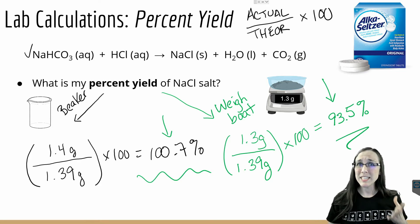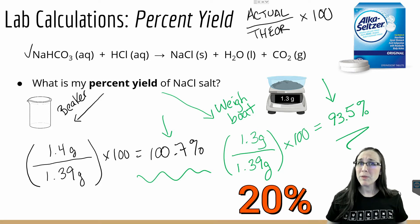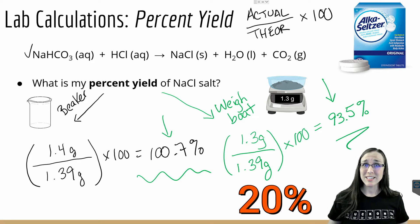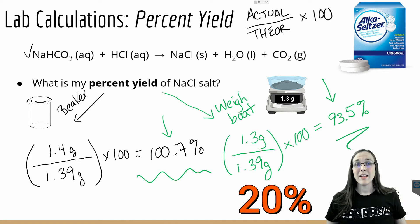What if I have a percent yield that's substantially lower than what I expected, say like 20 percent? Well that would imply that I did a pretty crappy job of getting all of the product I expected. So either the reaction didn't take place at all, or I simply wasn't able to isolate my product, and that would give me a value that's much less than what I anticipated.